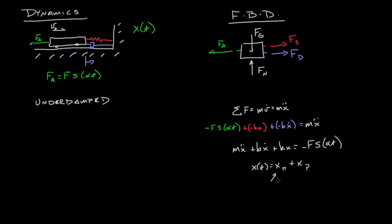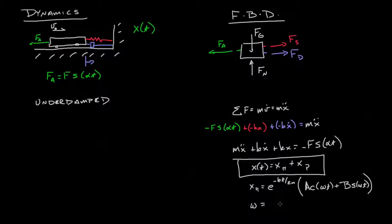And the overall equation, the homogeneous solution, is simply e to the negative bt over 2m times a cosine omega t plus b sine omega t. And of course we can identify what a and b are based on initial conditions. We're going to skip that for right now. So here we have our homogeneous solution.